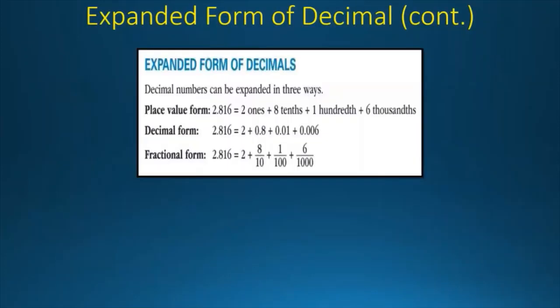A decimal number can be expanded in three ways. First is the place value form — for example 28.16 equals 2 tens, 8 ones, 1 tenth, and 6 thousandths. Second is the decimal form: 2 plus 0.8 plus 0.01 plus 0.006. Third is the fractional form: 2 plus 8 by 10 plus 1 by 100 plus 6 by 1000.